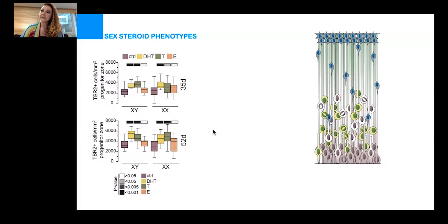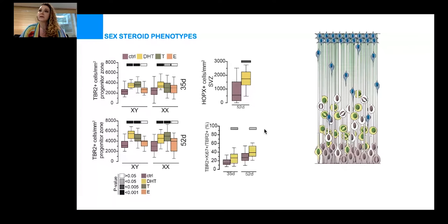In addition to an increase in intermediate progenitors, application of DHT also increased the number of basal radial glia, which are these white cells here, as seen by quantification of HOPX, which is a marker of these cells. When we look at the proliferation of these progenitors, it is also increased as shown here by the double staining TBR2 and proliferation marker Ki67. What is also very interesting and important, estrogen did not elicit any phenotype in any of the assays that we studied.